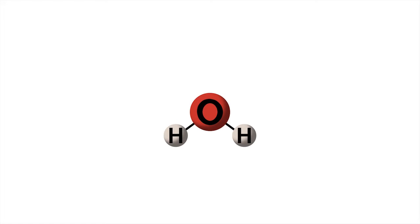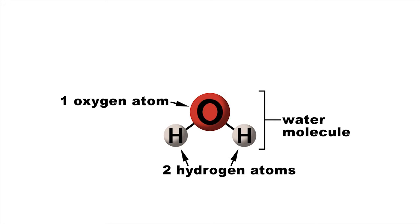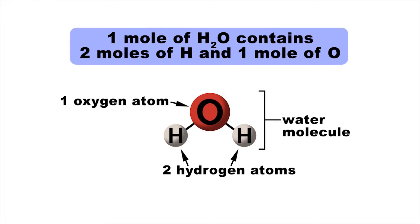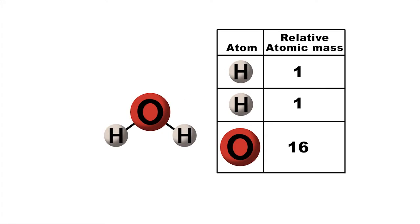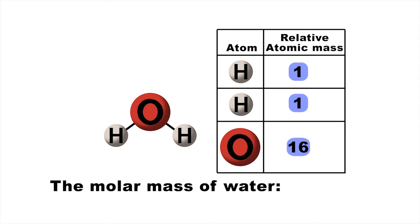Let's do a similar calculation for water. A molecule of water is made up of two atoms of hydrogen and one atom of oxygen. So a mole of water contains two moles of hydrogen atoms and one mole of oxygen atoms. To work out the molar mass of water, you just add up the relative atomic masses of its individual atomic components. So the molar mass of water is one plus one plus sixteen, which equals 18 grams per mole.